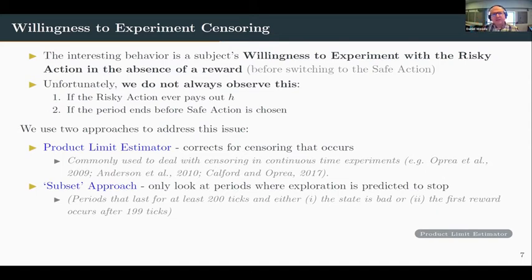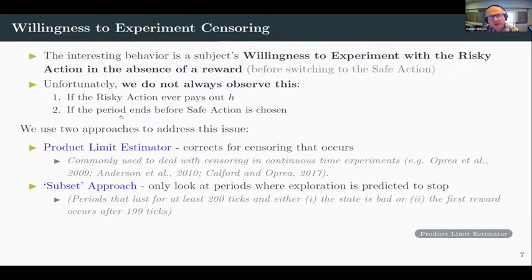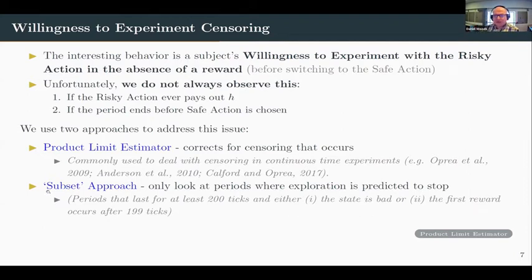Before the results, we need to talk about censoring. The behavior we're interested in is a subject's willingness to experiment with the risky action in the absence of a reward, but we don't always observe this — if a subject gets a reward they won't switch, and if the period randomly ends before they switch we also don't see it. We use two approaches: the product limit estimator to correct for censoring, and the subset approach where we only look at periods where exploration is predicted to stop to reduce censoring. Our results are largely robust to either approach.